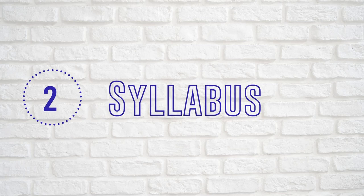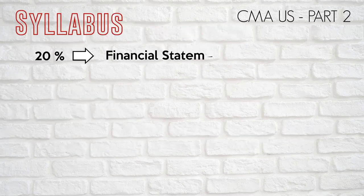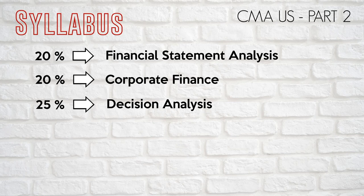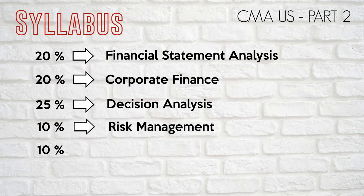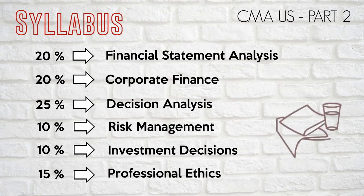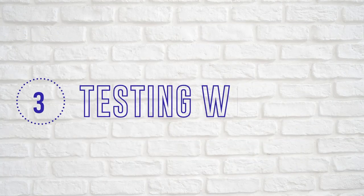Next is the syllabus of the Part 2 exam, Strategic Financial Management. Similar to Part 1, the Part 2 exam is also divided into six sections. Financial Statement Analysis and Corporate Finance each make 20% of the exam content. Decision Analysis makes 25% of the exam content. Risk Management and Investment Decisions each make 10% of the exam content. Lastly, Professional Ethics makes 15% of the exam content.